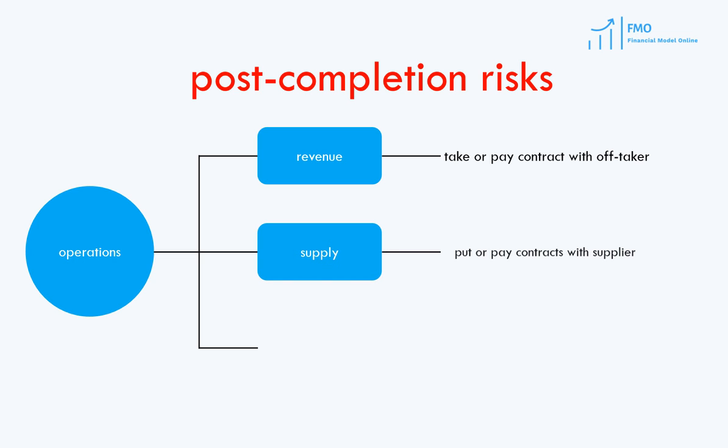Next is the risk of supply — that the necessary amount of raw material will be supplied to the project at the specified price in the supply contract. This risk is managed through put-or-pay contracts, under which a party agrees to supply a raw material for a certain price during a stated period and agrees to pay for an alternative supply if it cannot perform. So the suppliers take the risk.